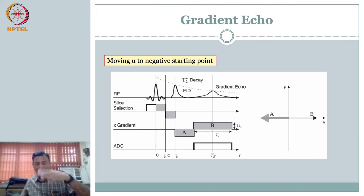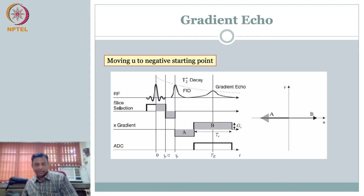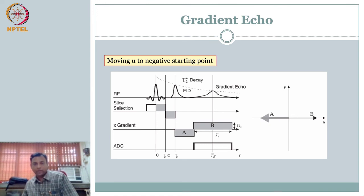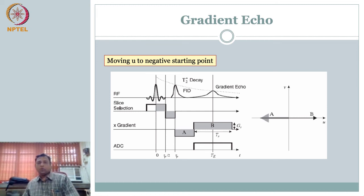I hope you listen to this lecture a few times and get a feel for it. What does the gradient echo do in terms of Fourier space? When I applied the negative x-gradient, I moved to the negative u-axis. I am not reading during the negative gradient — I am reading only during the positive gradient B. So I moved to the left and the data starts from the negative u-axis and goes all the way to the positive u-axis, with gamma*g_x*T_s as the maximum frequency. Now the question is: how do you move in the v direction?